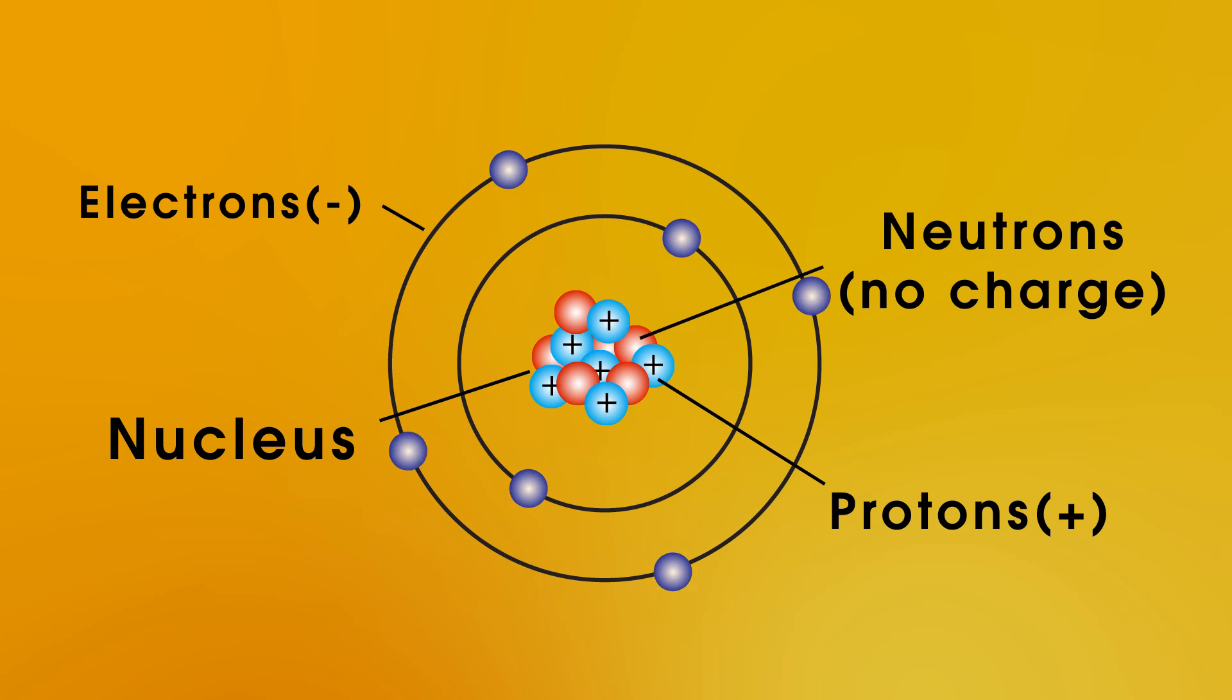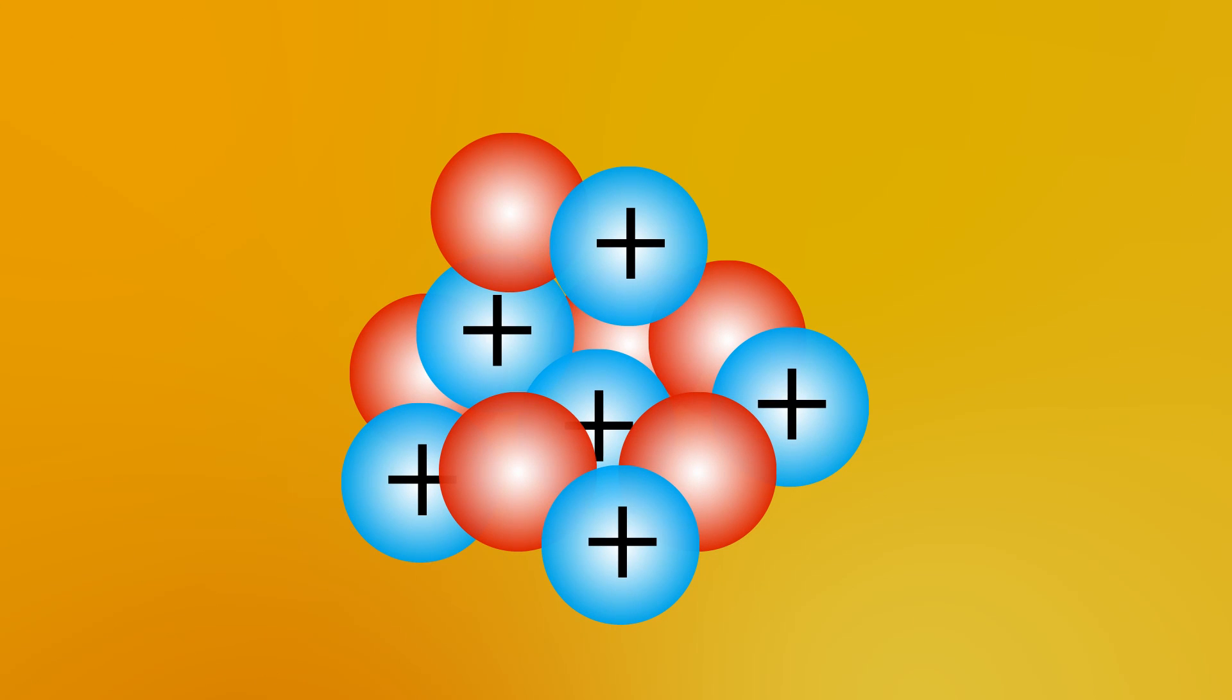Why are some atoms radioactive? Well, it's all to do with the nucleus, so let's just focus on that. In the nucleus, we have lots of protons, which are all positively charged, and because of that, they want to repel each other. It's the neutrons in the nucleus that stop this and hold the whole thing together. This nucleus, a carbon nucleus, has 6 neutrons and 6 protons and is a stable nucleus.